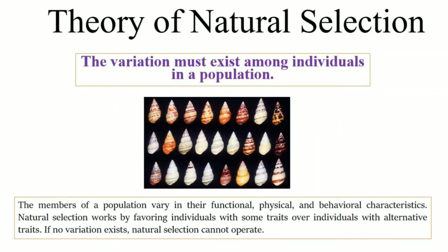Returning to the first condition: individuals present in a population must have variations, whether in their functional, physical, or behavioral characteristics. Natural selection works by favoring individuals that have certain traits over individuals that have alternative traits. If there are no variations, the mechanism of natural selection cannot operate on that particular population.